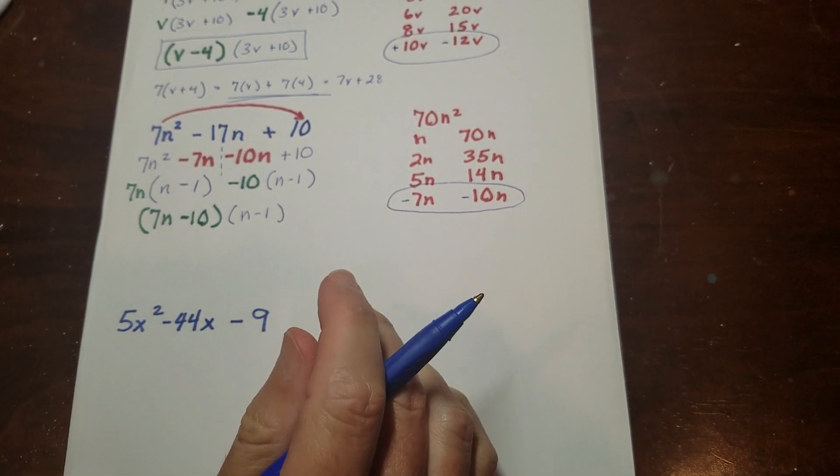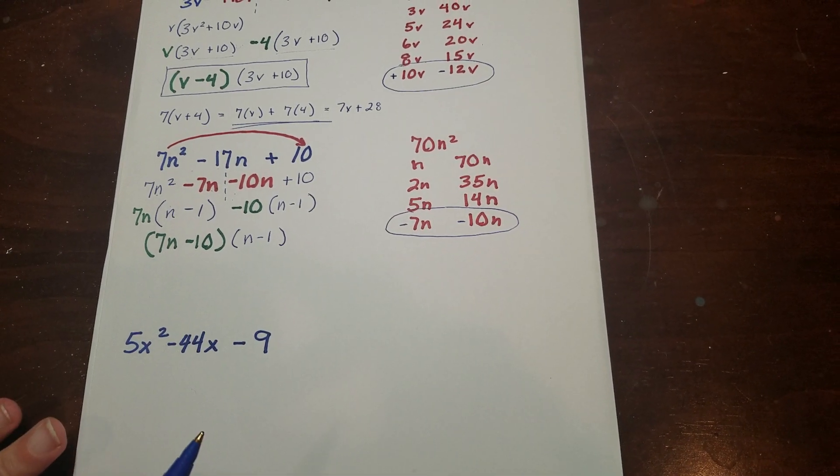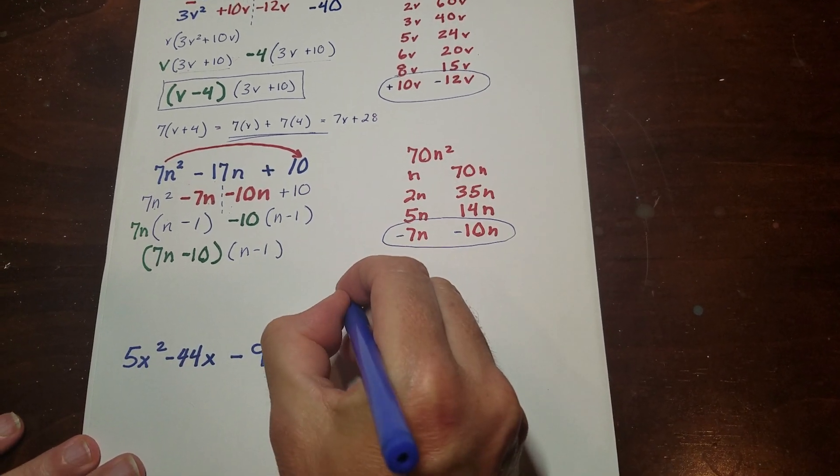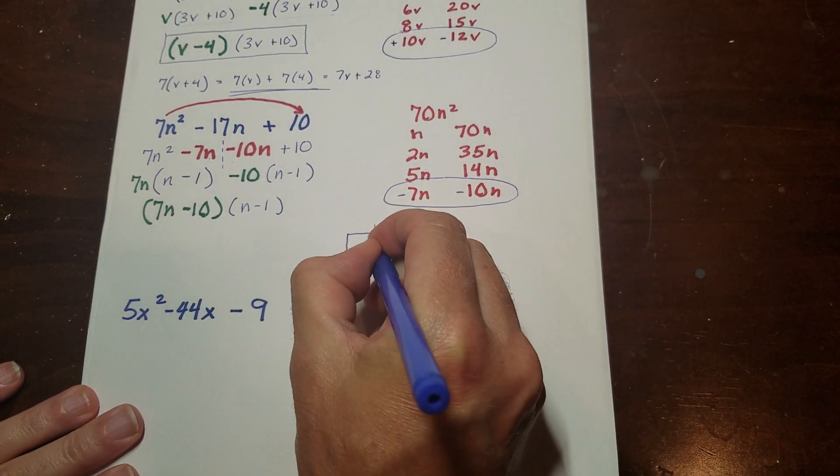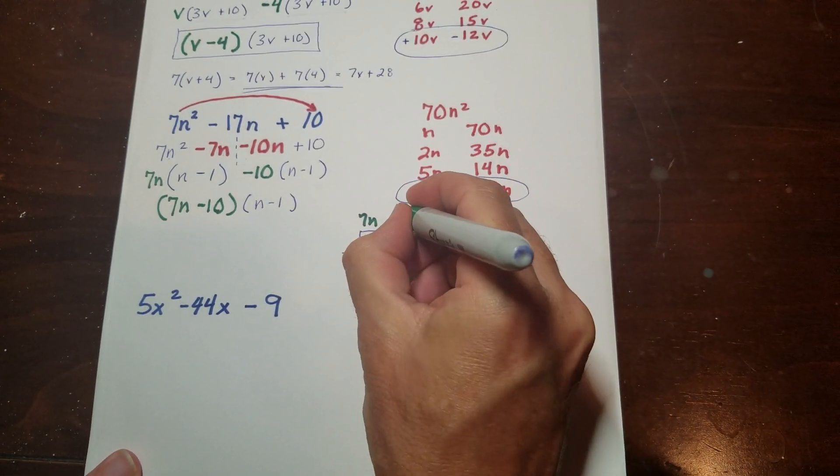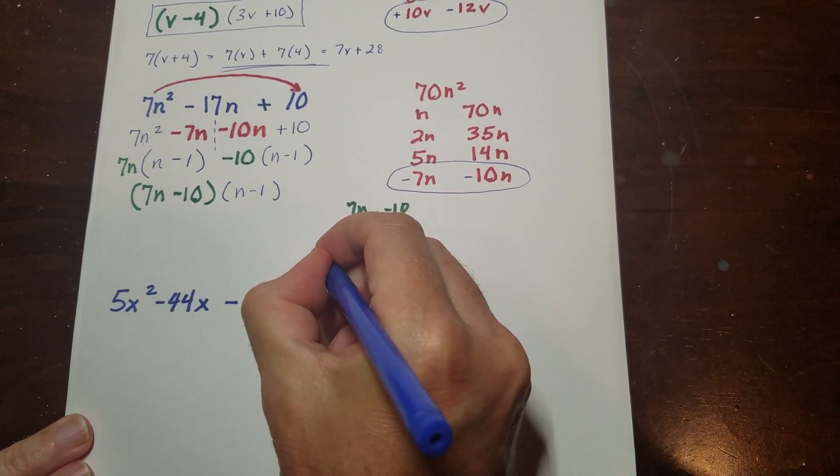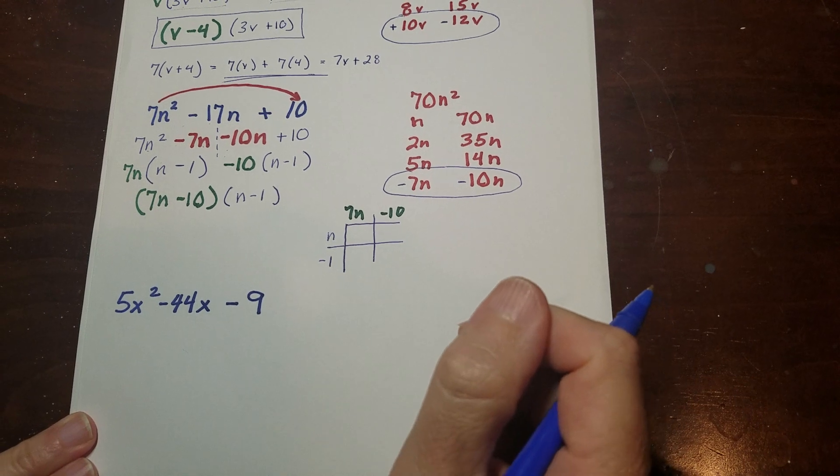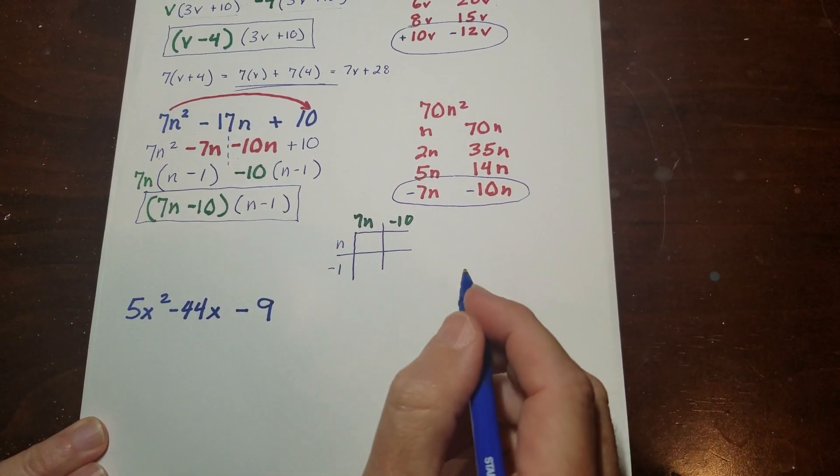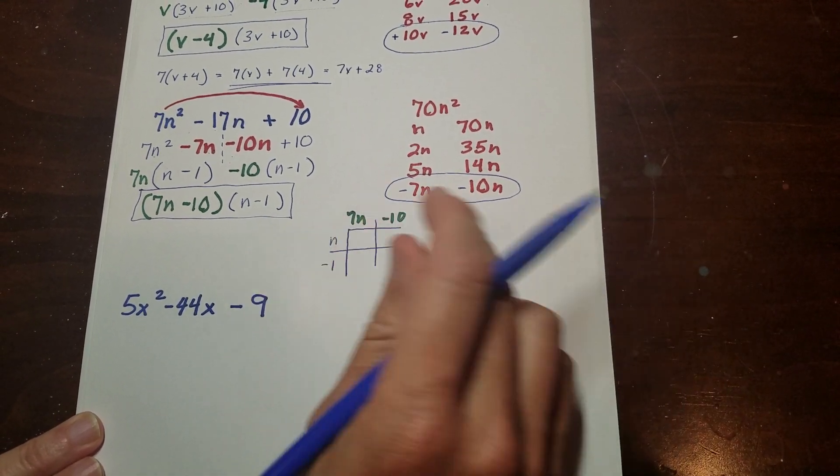Now I want to stop here for a second because this has come up with some questions I've gotten in terms of people wondering if their answer is correct. So when you're doing this, this is a great place to check your answer. And all you do is you take the two that you got. So I have my 7n minus 10. And then I have my n minus 1. And then this was the very first thing we did when we started factoring was multiplying these binomials. So if you want to check to make sure you're doing it correct, you know, it's always on the worksheet. But if you're doing a test or something, you want to make sure you got it right. This is what you do.